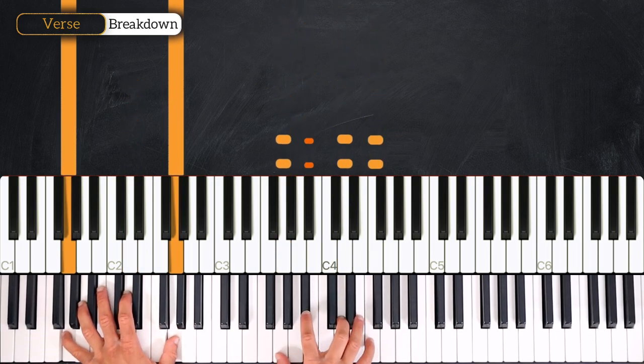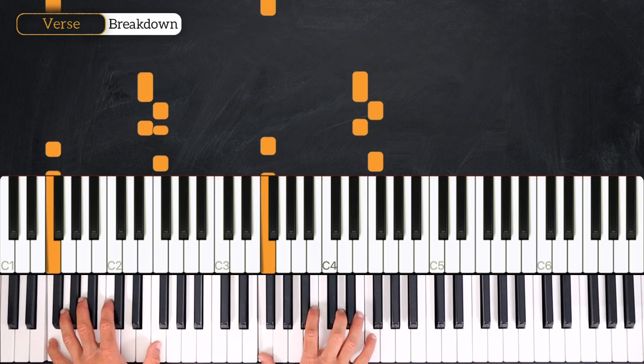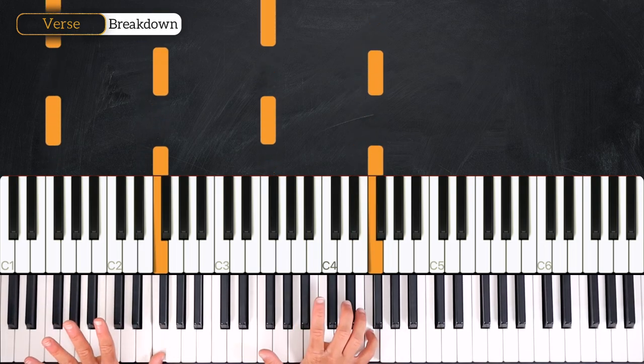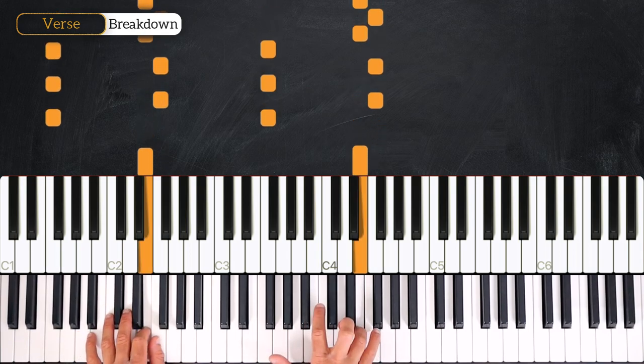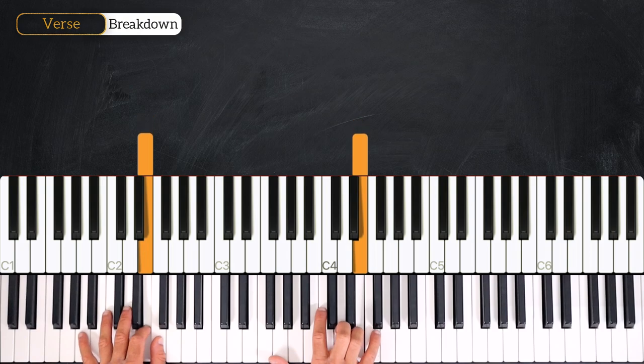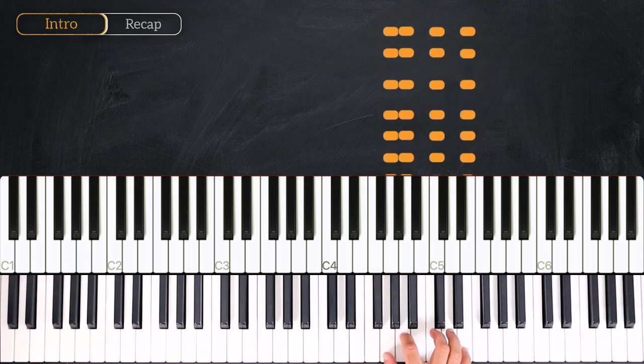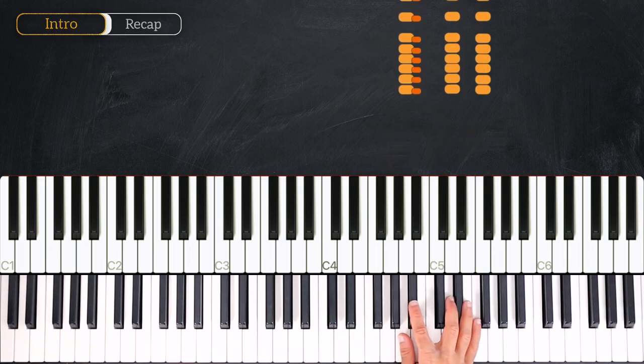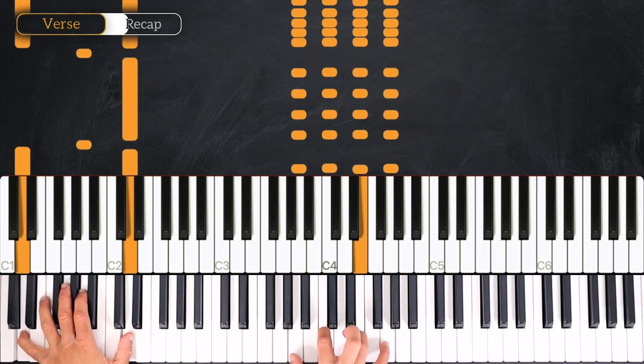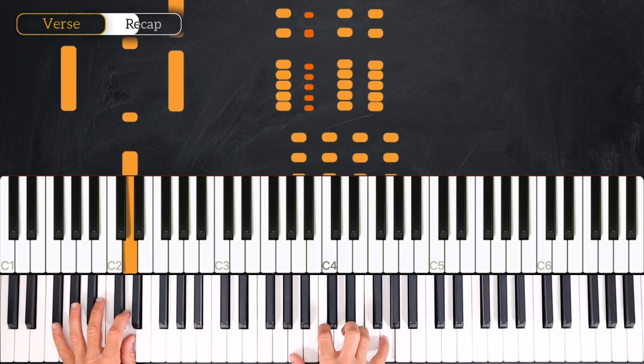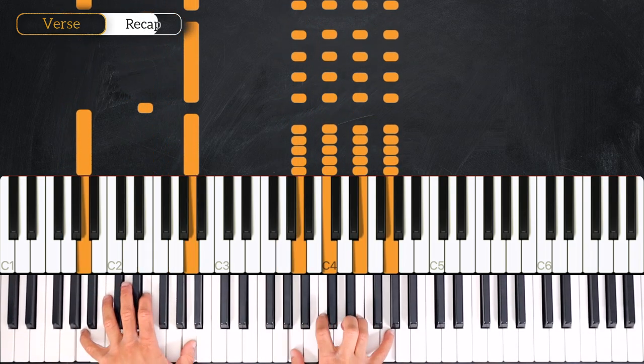And from here we start the next bar the same way and then we'll play an octave, this little riff. So we play F, F, F, F, F, 5 F, and then E, F, E. And that's all.